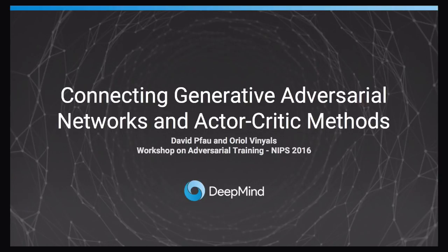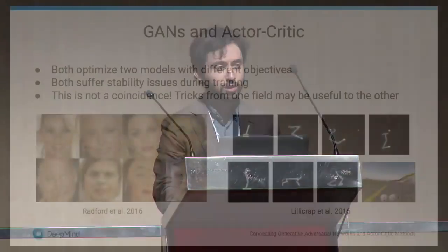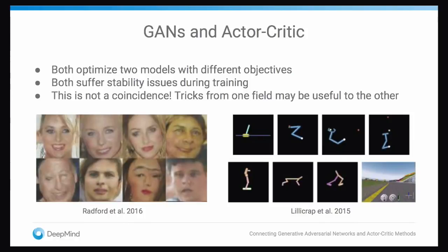I'm David Pfau, talking about connections between generative adversarial networks and actor-critic methods. Actor-critic methods are a class of algorithms in reinforcement learning where you learn a policy and a value simultaneously. In recent years in deep reinforcement learning, this class of methods has shown a lot of promise in continuous domains, like reaching and grasping, walking and driving.